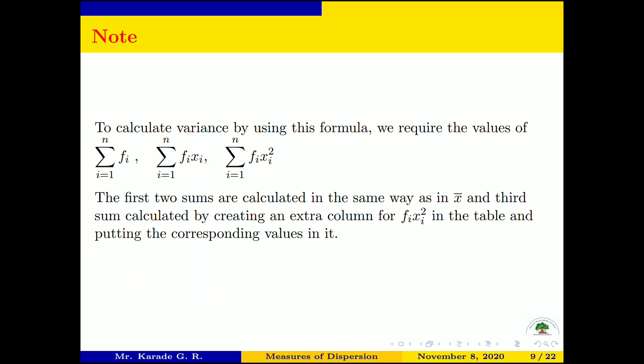The first two sums, summation Fᵢ and summation FᵢXᵢ, are calculated the same way as when computing X̄. The third sum, summation FᵢXᵢ², is calculated by creating an extra column for FX² in the table and putting the corresponding values in it. Now let us take some examples.